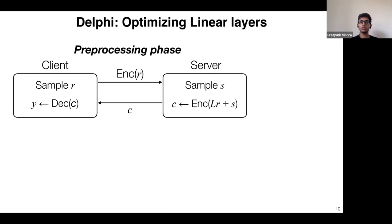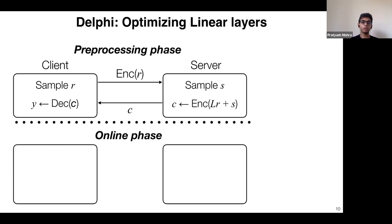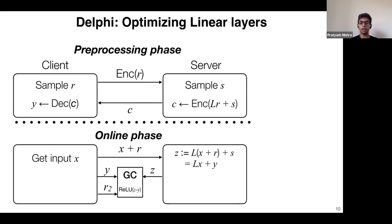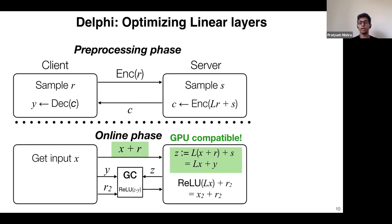The client and server store r, y, and S. Then in the online phase, when the client's input becomes available, the client sends x masked by the random value r. The server applies the linear layer to x plus r. The key insight is that the client holds y and the server holds Lx plus y, forming a secret share of Lx. These values are plugged into the garbled circuit, which undoes the secret share, recovers Lx, applies the ReLU, and outputs a fresh randomized share for the next linear layer.